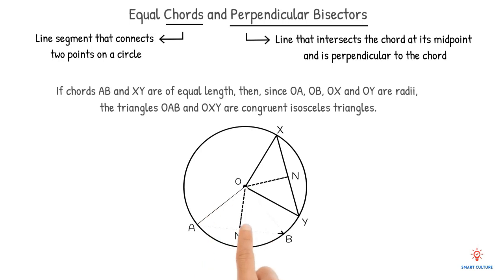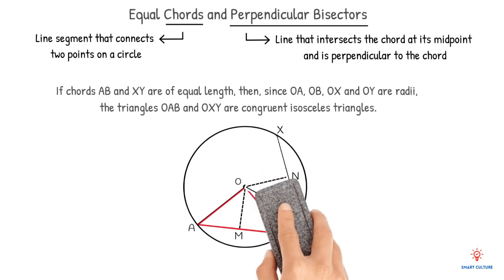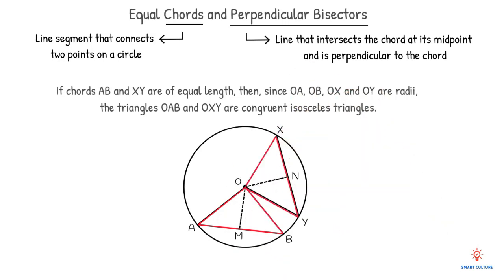the triangles OAB and OXY are congruent isosceles triangles. This is very important.